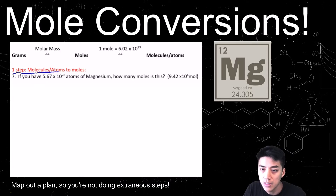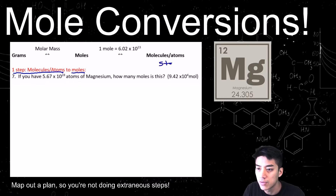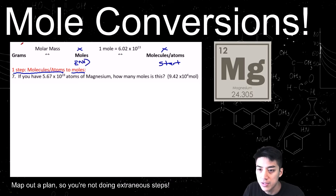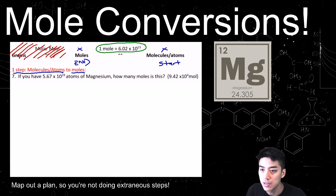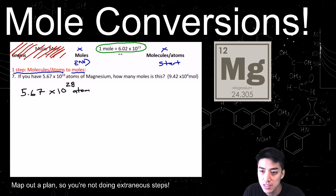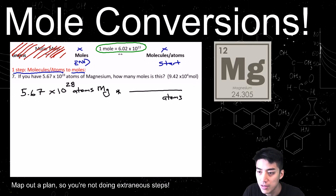This problem is also one step, but this time you're starting in atoms and going to moles — starting on the far right of the chart. I'm mapping out a plan so I know exactly what to do. We're ending on moles, which means I won't have to use the molar mass. Even though the magnesium square is above me, I just need the conversion factor circled in green. Start by writing down 5.67×10²⁸ atoms of magnesium, times sign, draw a line. Write atoms on the bottom so they cancel.